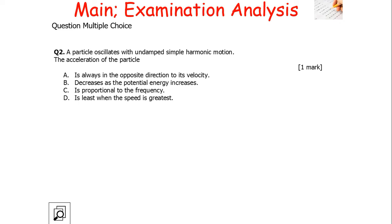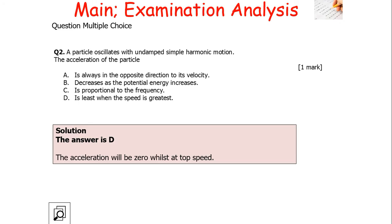Question 2: a particle oscillates with undamped simple harmonic motion - the acceleration of the particle is always what? The answer is D, because the acceleration will be zero when the particle is at its maximum speed. The acceleration is least when the speed is greatest - this is true for simple harmonic motion and also for any type of motion.